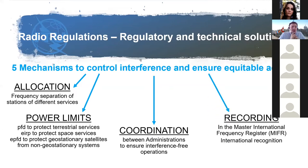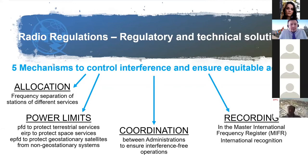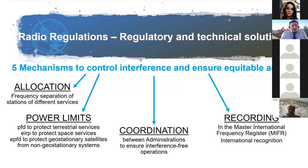To manage this coordination process, the ITU maintains an international database called the Master International Frequency Register, which contains the list of all frequencies used in outer space and terrestrial systems. This database provides the complete list of frequencies either in use or planned for satellite systems. With this database, administrations can use it as a basis for their technical discussions.